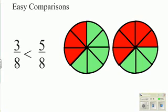It's easy to compare fractions with a common denominator. Three-eighths, obviously, is less than five-eighths.